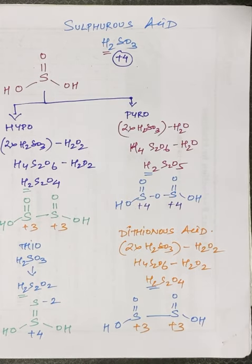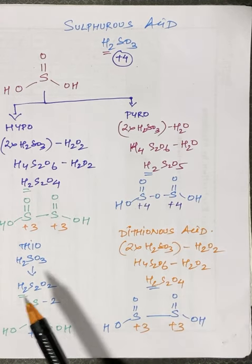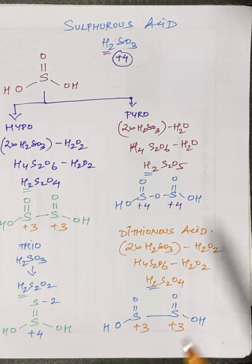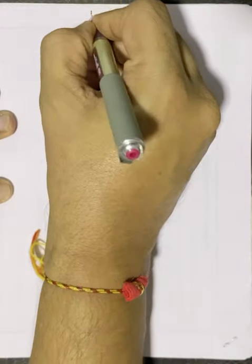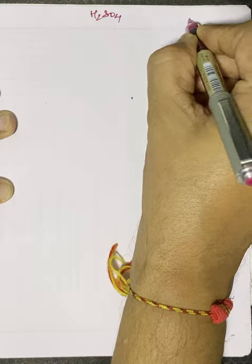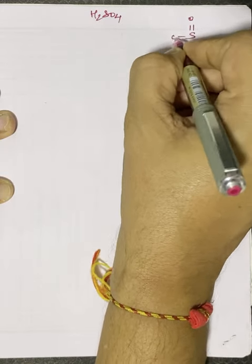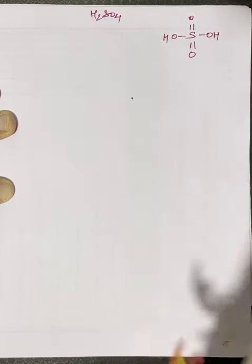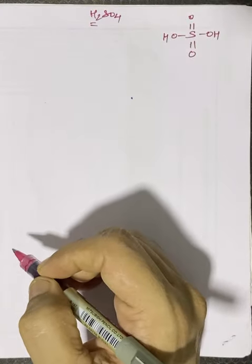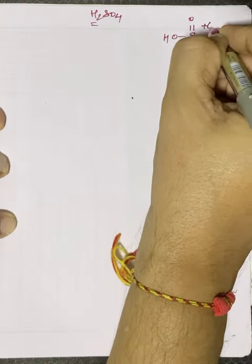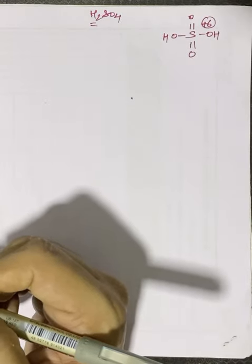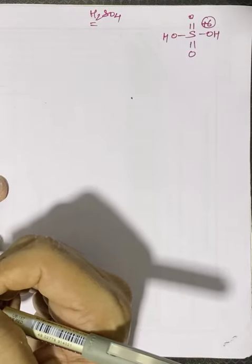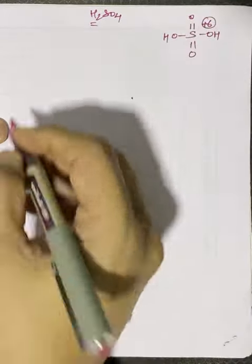Now the last category is based on sulfuric acid, H₂SO₄ — a dibasic acid with sulfur in the +6 oxidation state and two OH bonds. From sulfuric acid we can derive five oxy acid compounds.